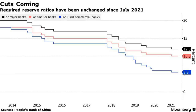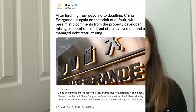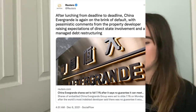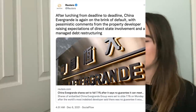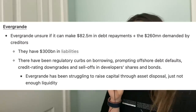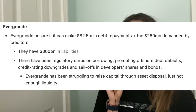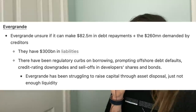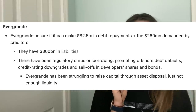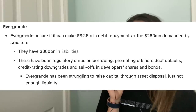The RRR cut releases 188 billion dollars, or 1.2 trillion yuan, of liquidity, which should be helpful. Evergrande is still unsure if they can make their 82.5 million dollar debt repayment, and creditors are demanding 260 million dollars. On top of that, they have 300 billion dollars in liabilities. Beijing's clampdown on borrowing led to offshore debt defaults, credit rating downgrades, and sell-offs in bonds.